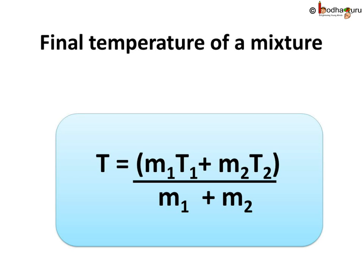where the higher of the two temperatures is called T1 and T2 is the lower temperature and T is the final temperature of the mixture, then T equals M1 T1 plus M2 T2 whole divided by M1 plus M2.